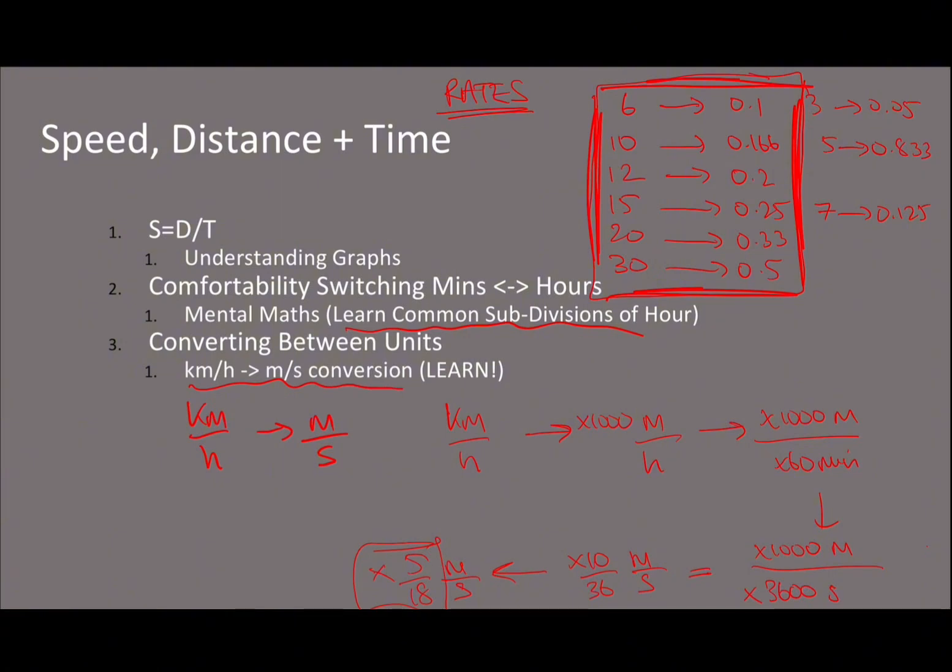To go from kilometers per hour to meters per second, multiply by 5/18. This is one of the very few things good to learn in the UCAT. They're not asking you to differentiate or integrate, but this is something you should learn. I've seen questions where the whole idea is to make you do all this conversion, and you can save time by knowing it. The other way, meters per second to kilometers per hour, multiply by 18/5.